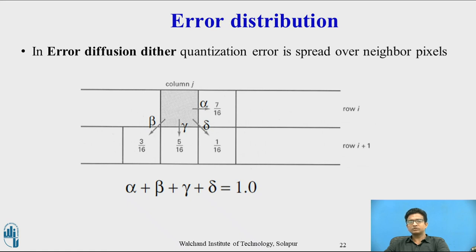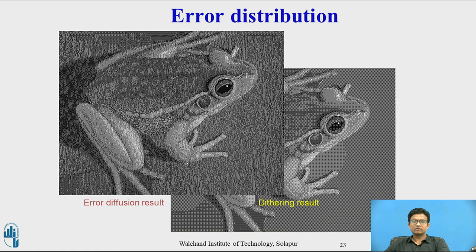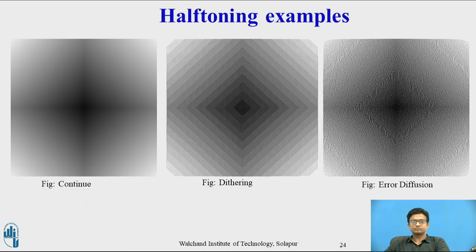In error distribution, the quantization error is spread over neighboring pixels. The error is dispersed to pixels to the right and below, represented by alpha, beta, and gamma terms, all of which should sum to 1. These are examples showing how the image is represented with error diffusion and dithering results. The half-tone examples show continuous half-tone, dithering, and error distribution.